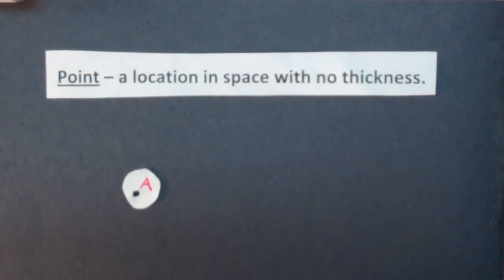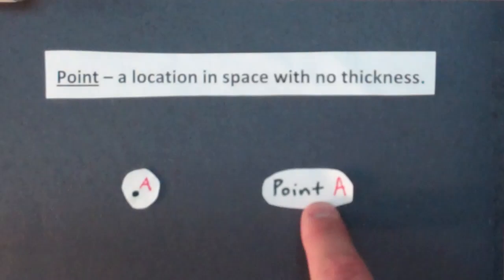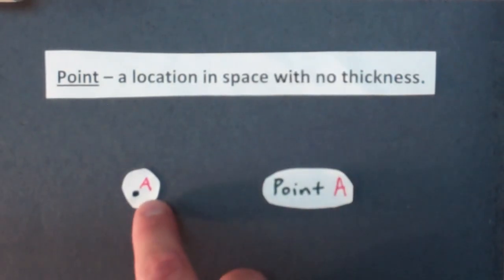If you were to see this picture written down in a sentence, you would see the word point with the capital letter A next to it. So if this was a capital letter B, it would be written down as point B.